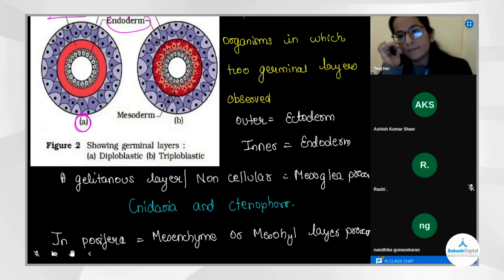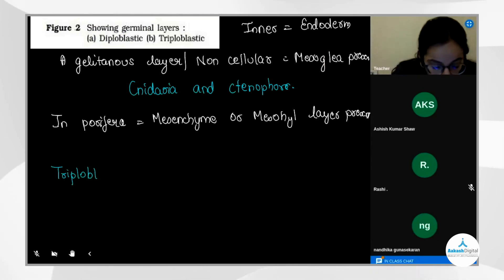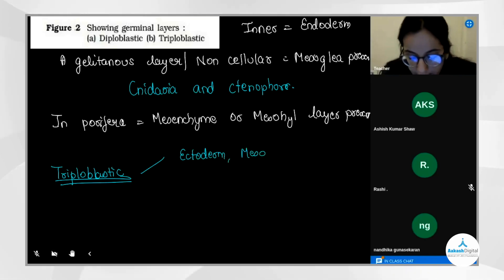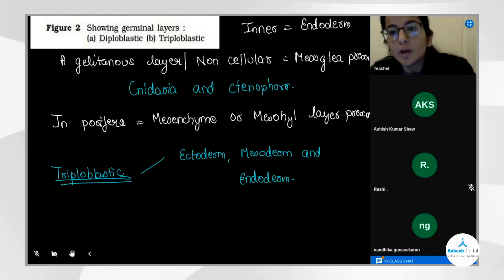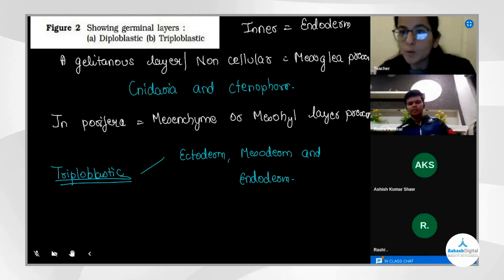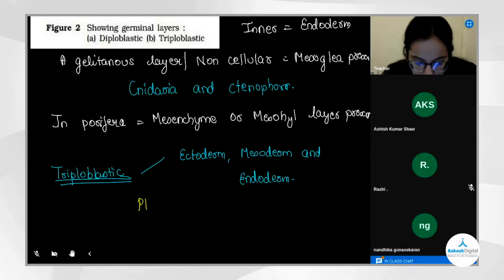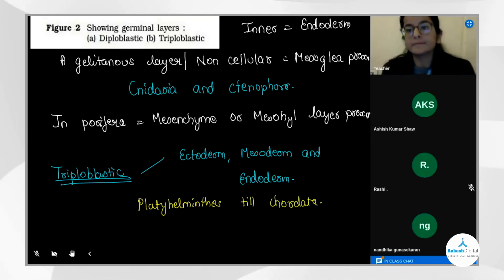To summarize: diploblastic organisms have two germinal layers — ectoderm and endoderm — with mesoglia in between, for example in phylum Cnidaria and Ctenophora. Triploblastic means containing three germinal layers. Triploblastic organization starts from phylum Platyhelminthes, since from Platyhelminthes through Chordata, three germinal layers are present. Everyone confirms they are clear on germinal layer organization.